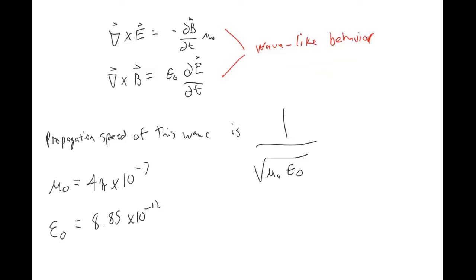I'll have you guys calculate what this propagation speed is — just trust that the units all play nicely together. Plug it into your calculator. You get about 3 times 10 to the 8, and the units are meters per second. Do you guys know what has that speed? It's a very famous speed. Yeah — it's light. This is the speed of light, which we write as the variable lowercase c.